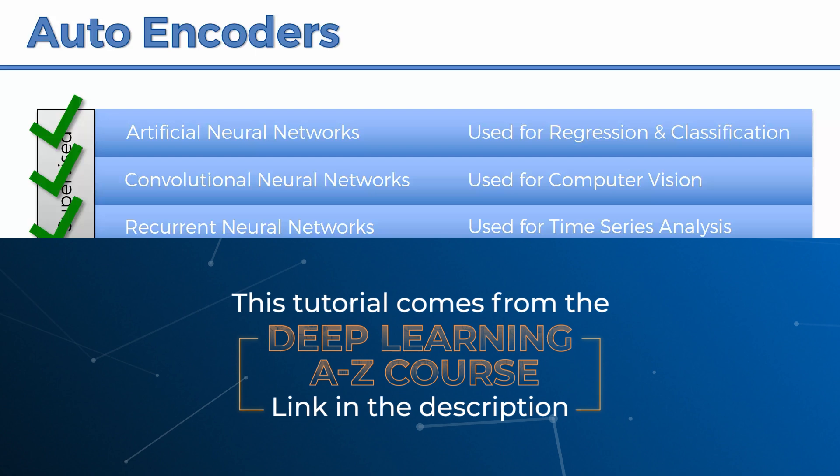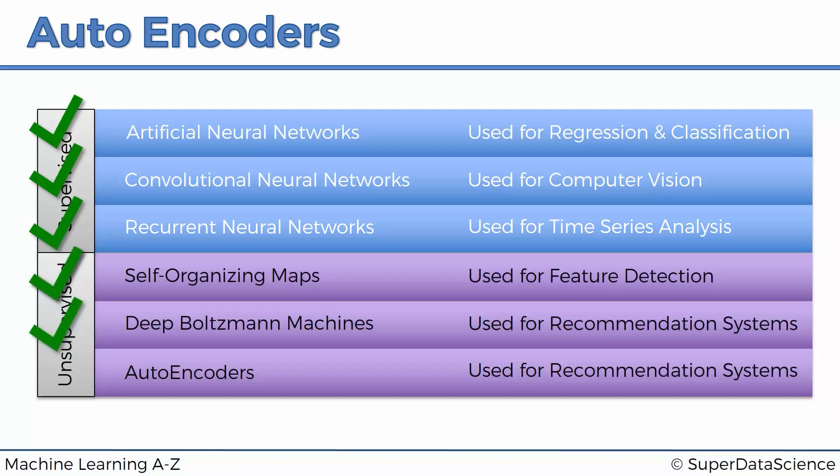We've already talked about artificial neural networks, convolutional neural networks, and recurrent neural networks, and that summarized the supervised deep learning side of things. And now we are in the unsupervised branch of deep learning and we've already talked about self-organizing maps, Boltzmann machines, and now we're proceeding to autoencoders.